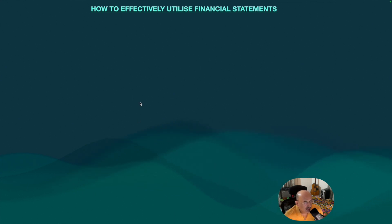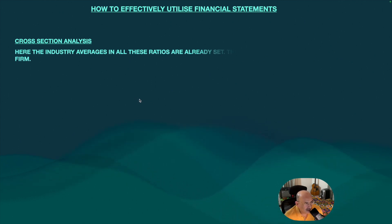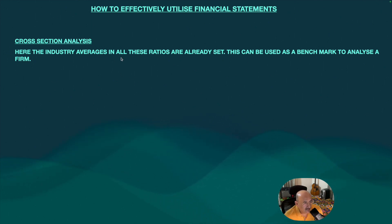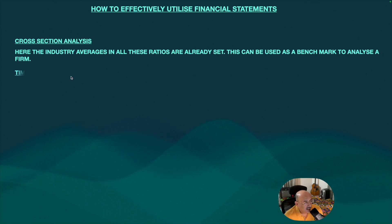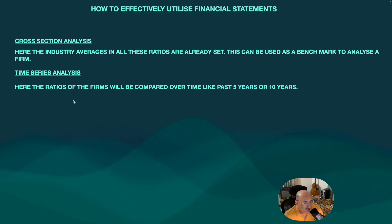Now, how to effectively utilize financial statements. There are various types of analysis. The first is cross-section analysis, where industry averages for all ratios are already set and used as a benchmark. The second is time series analysis, where ratios of the firm are compared over time — for example, the past 5 or 10 years.